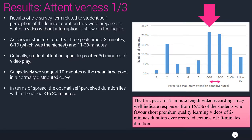Results show that six to ten minutes was the most popular attention span range, which is even less than what the related work suggested. Critically, student attention span drops after 30 minutes of video play. Subjectively, we suggest 10 minutes is the main point in time, and the optimal self-perceived duration lies within the range of 8 to 30 minutes — likely a 15-to-20 minute period would be optimal. About 15.2 percent of students favor short premium-quality two-minute videos over 90-minute recorded lectures.